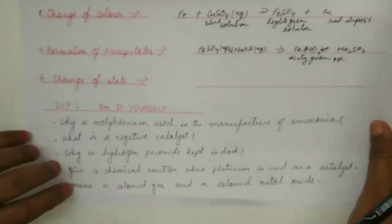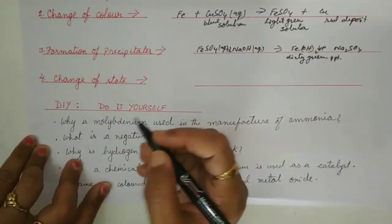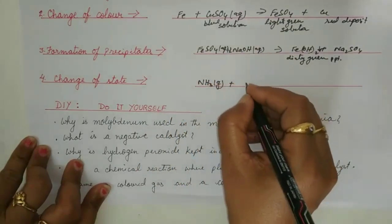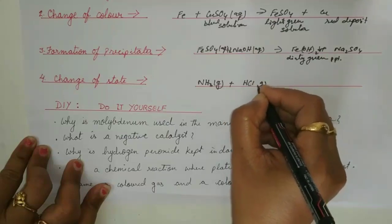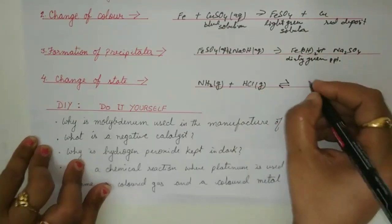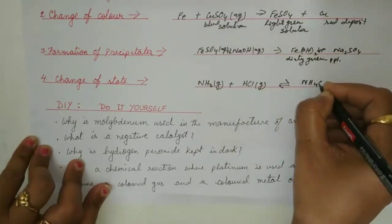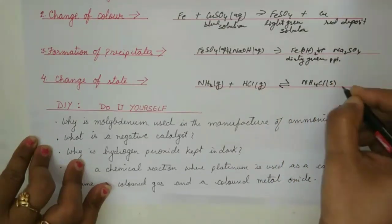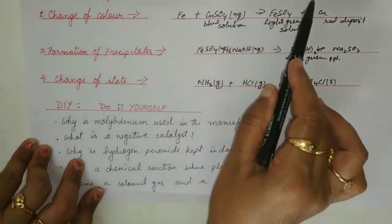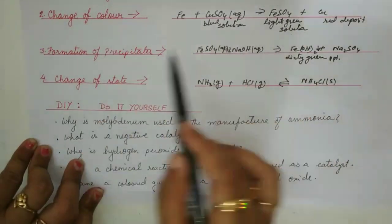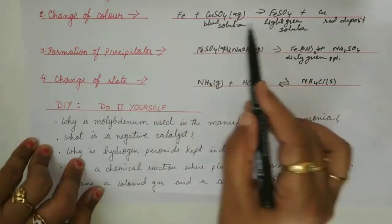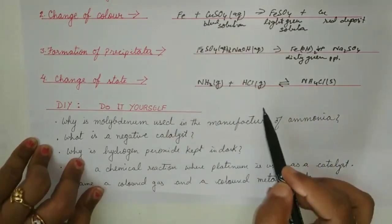The fourth characteristic is change of state. Ammonia gas plus HCl gas undergo a reversible reaction to give ammonium chloride, which is in the solid state. So we have seen all four characteristics: evolution of gas, change of colour, formation of precipitate, and change of state.